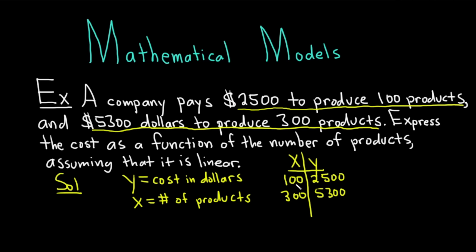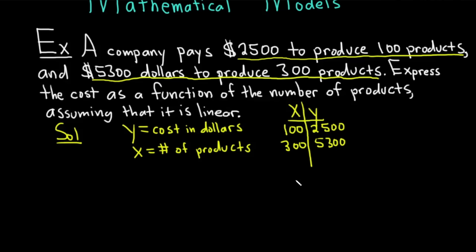So now what we can do is because we have two points basically, right, this is an ordered pair, 100 comma 2,500 and 300 comma 5,300, we can find the slope. So the slope is rise over run. So it's m equals, and basically you just subtract the y values, you divide and you subtract the x values. So we just have to be consistent how we subtract.